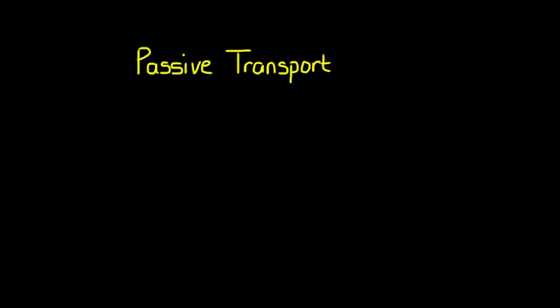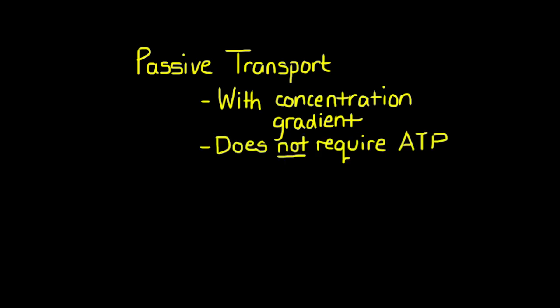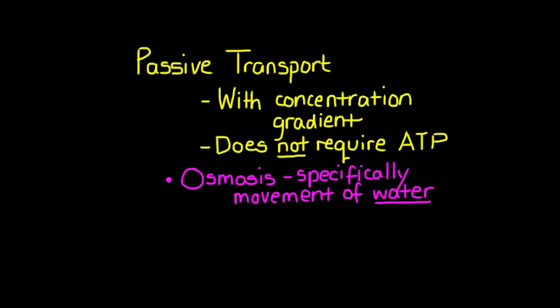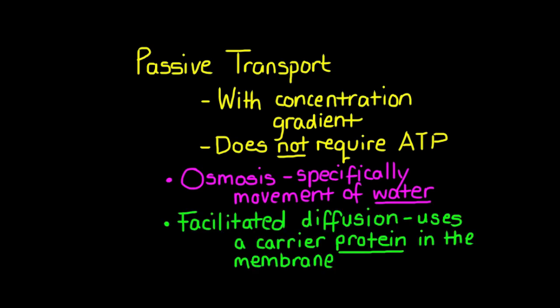So in summary, passive transport involves the movement of molecules with the concentration gradient, and it does not require ATP. However, osmosis is specifically the diffusion of water molecules, while facilitated diffusion involves the carrier protein in the cell membrane.